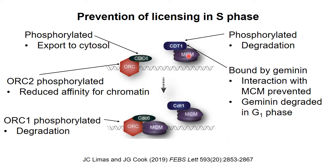Also, CDT1, the protein that brings the MCM complex to the origin, is phosphorylated, which promotes its degradation. And there's also a protein called Geminin, which is expressed in S phase, and it binds to any remaining CDT1 and prevents it from interacting with the MCM complex. Geminin stays in the cell through G2 phase and M phase, and is only degraded during G1 phase. So as the cell starts synthesizing CDT1 again after S phase, Geminin is still present to prevent CDT1 from bringing MCM proteins to the origin. Only in G1 phase is Geminin itself degraded, which frees CDT1 for interaction with the MCM complex. These redundant mechanisms all contribute to preventing replication origins from being licensed during S phase — having multiple independent mechanisms makes control of this process that much more complete.